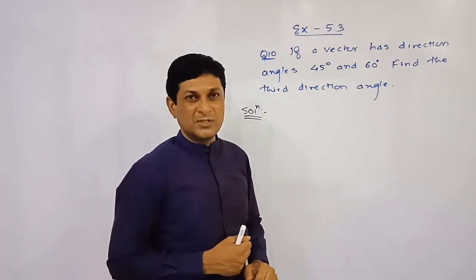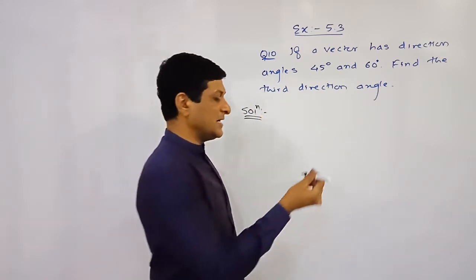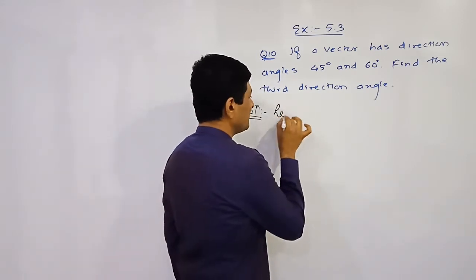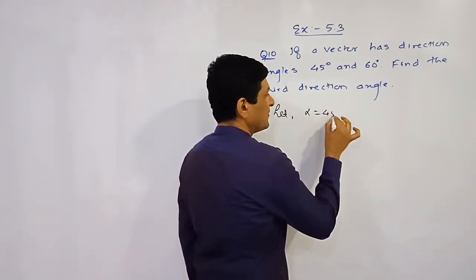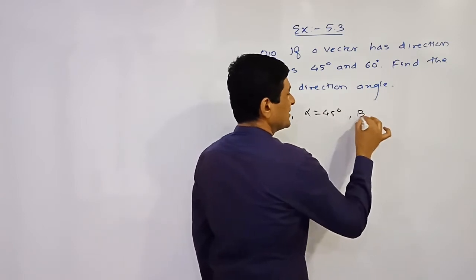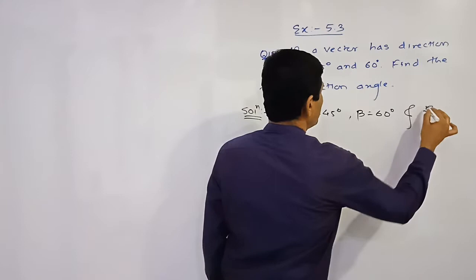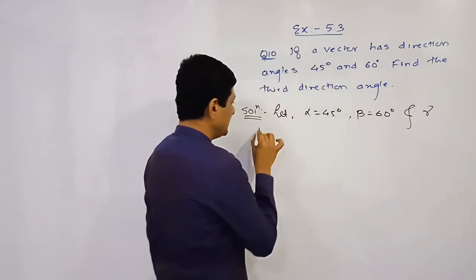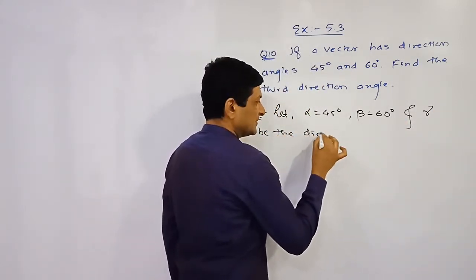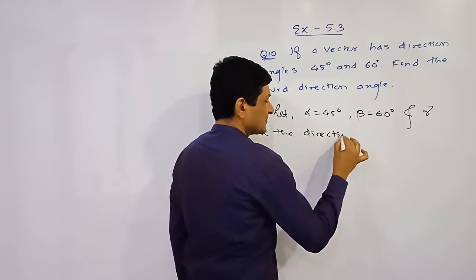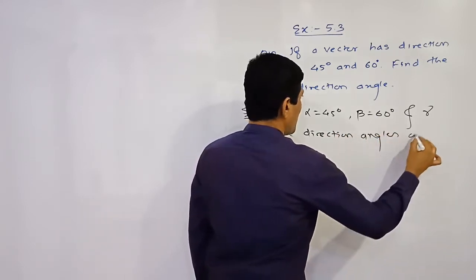Two direction angles are given and we need to find the third. Let alpha = 45 degrees, beta = 60 degrees, and gamma be the unknown third direction angle of the vector.